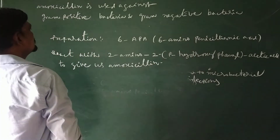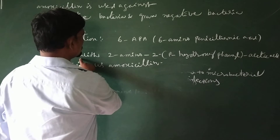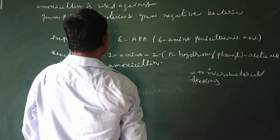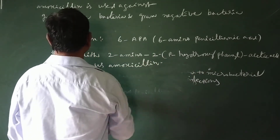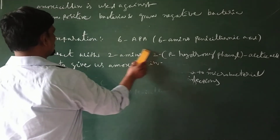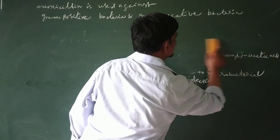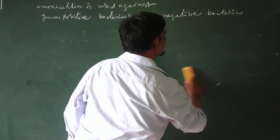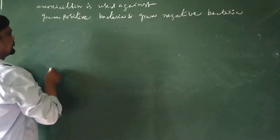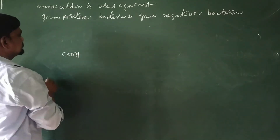When 6-APA is treated with 2-amino-2-parahydroxyphenylacetic acid, this is the amoxicillin synthesis — the amoxicillin acid is prepared.